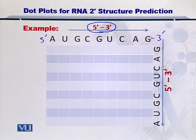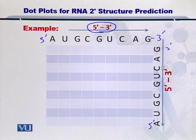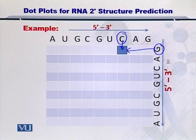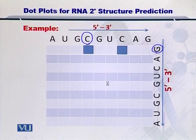In the next step, what you have to do is to connect the nucleotides that are complementary to each other. So you find out which nucleotide is complementary. As you can see, G is complementary to C, so you simply put a dot in the grid. Next, you find out that this G is also complementary with this C, and therefore you also put a dot here.